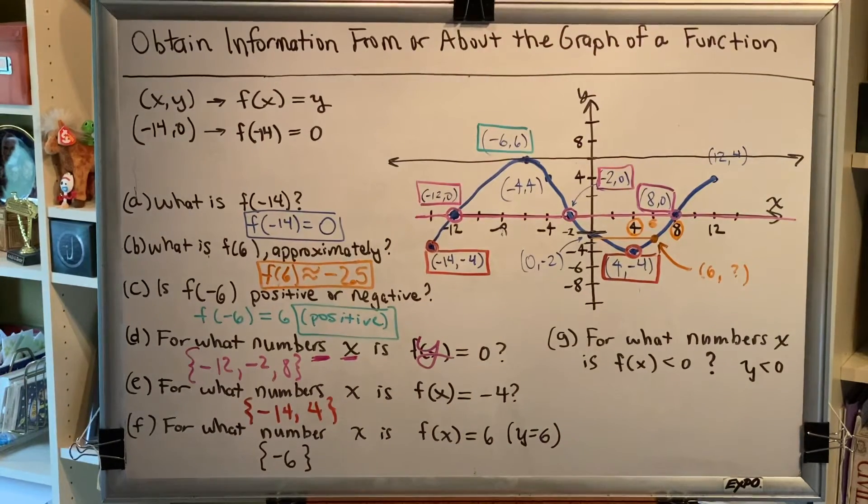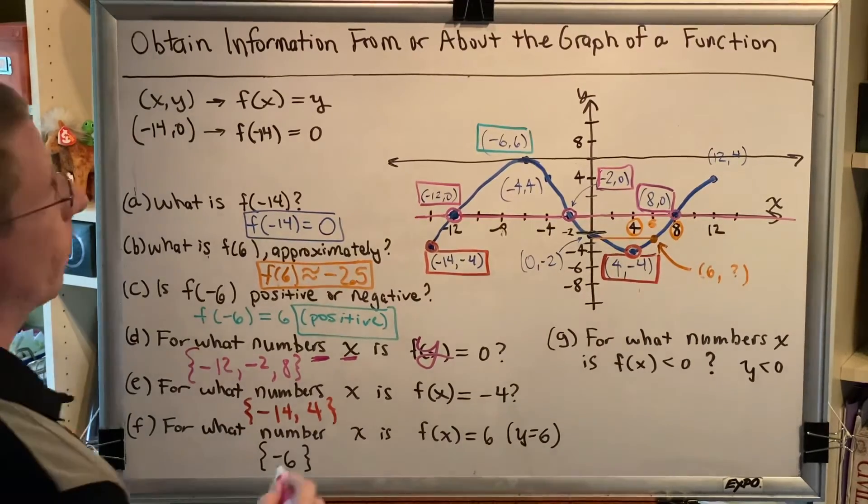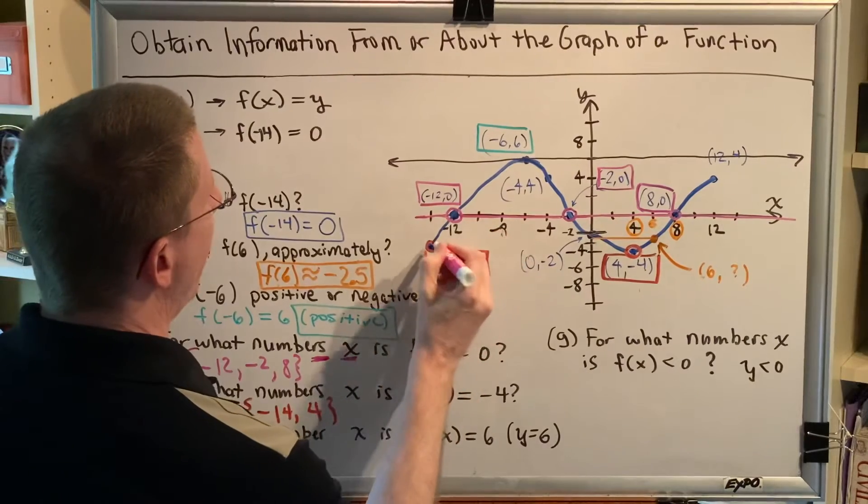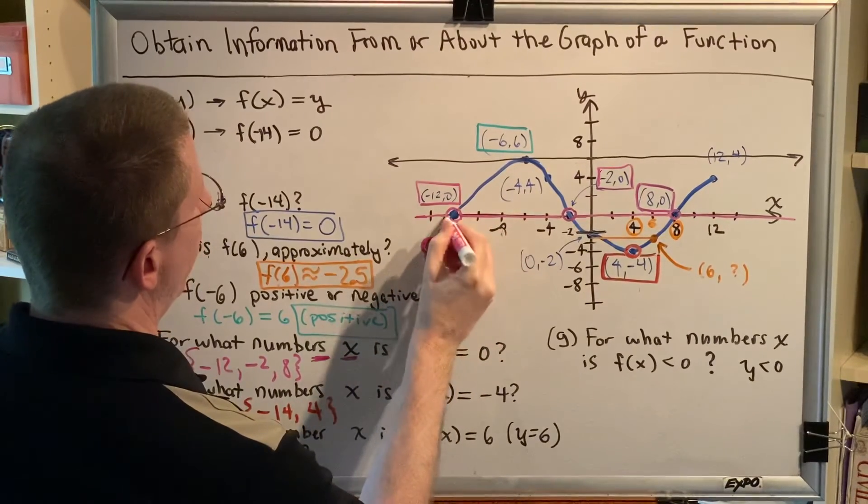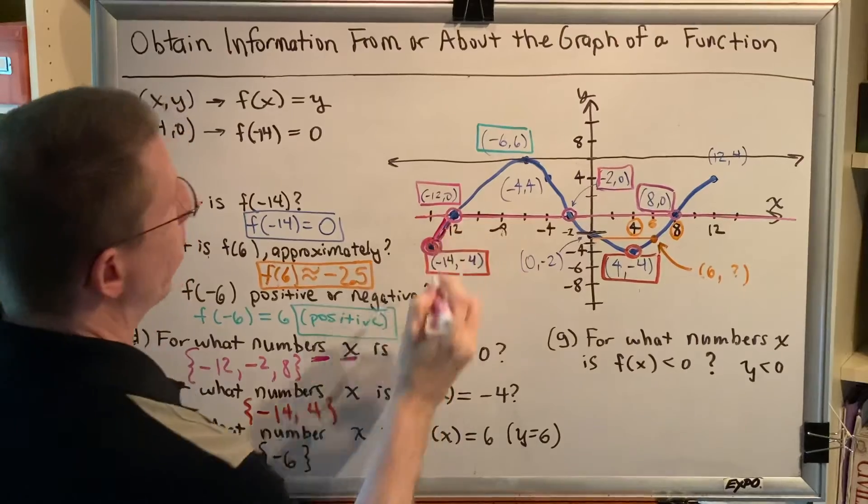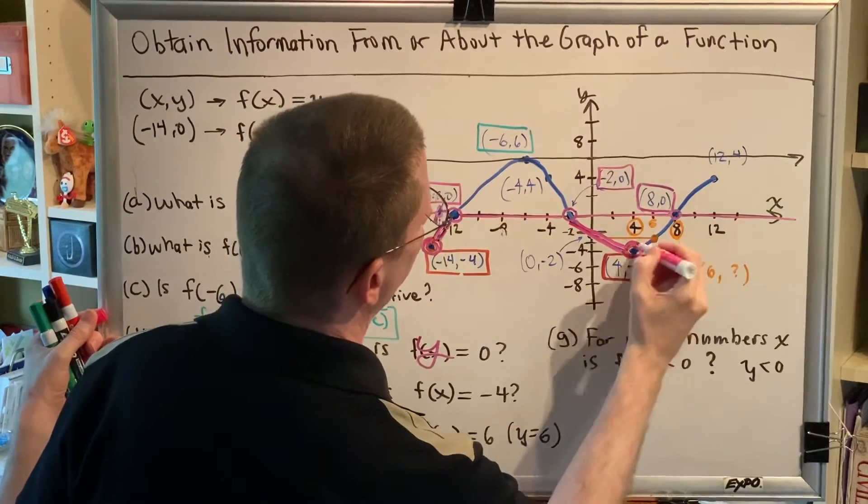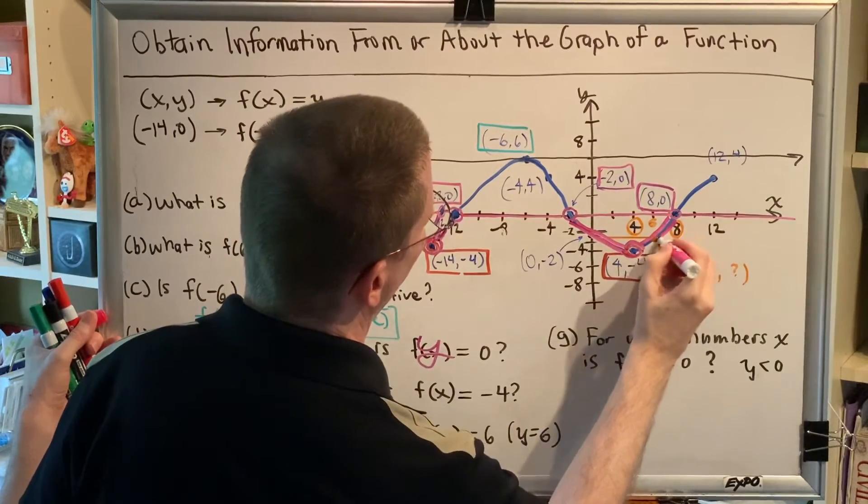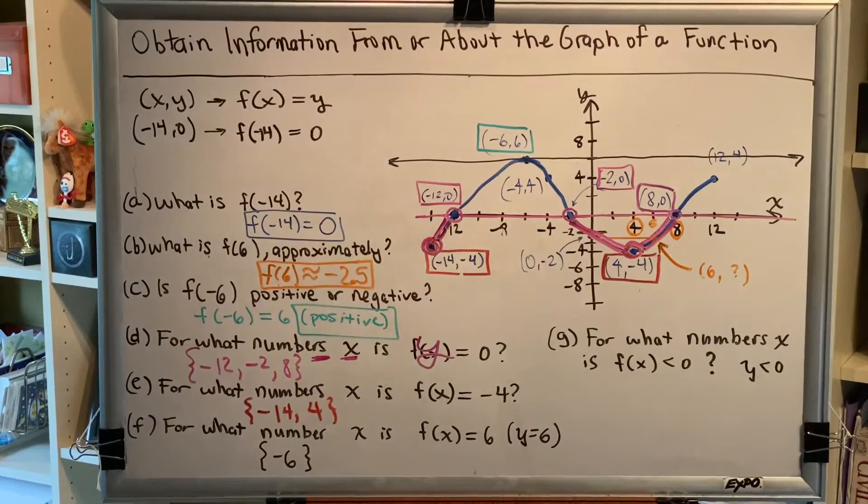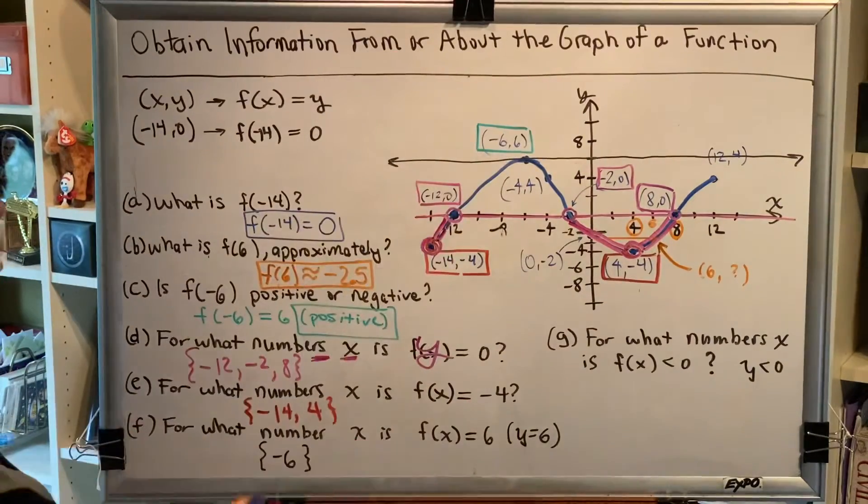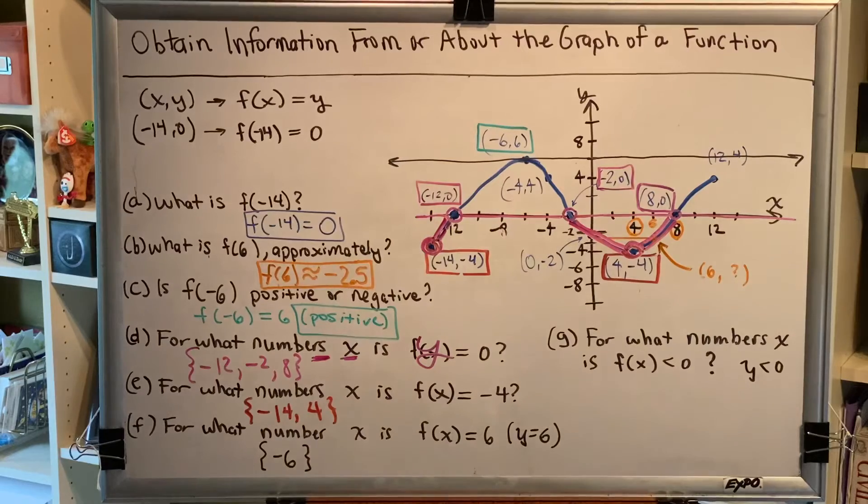I'm going to do this in pink. The points that are below the x-axis would be this part of the graph down here, and this part of the graph down here, and that's it. That's the part of the graph that is below the x-axis. So our job is to figure out which parts, which x coordinates of those points, we're going to present as part of our final answer.